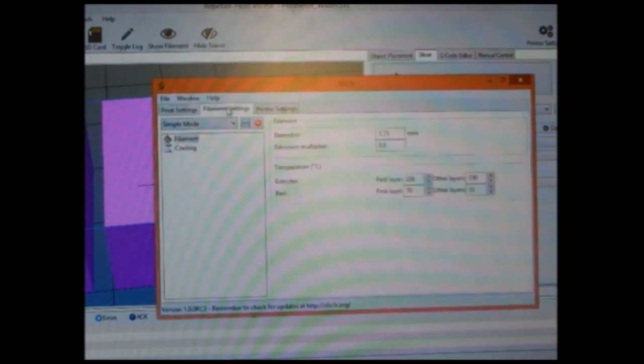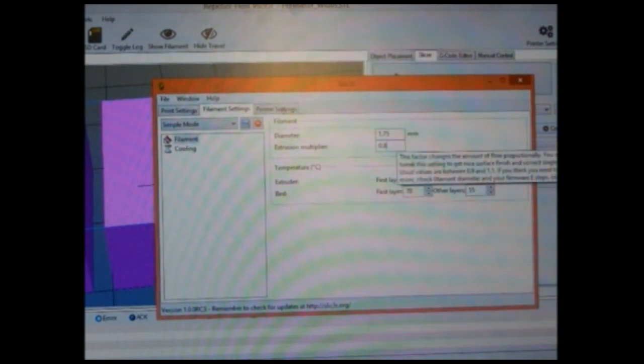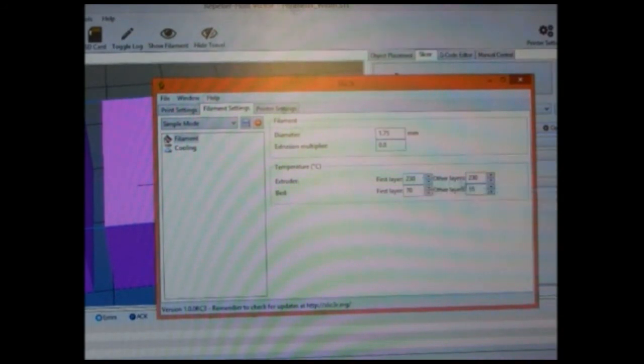Now in filament settings, put the diameter as 1.75mm, extrusion multiplier as 0.8, set the temperature of the extruder to 230 degrees Celsius, and other layers at 230. For the bed temperature, keep first layer at 70, and other layers at whatever temperature you like. We kept it at 55.